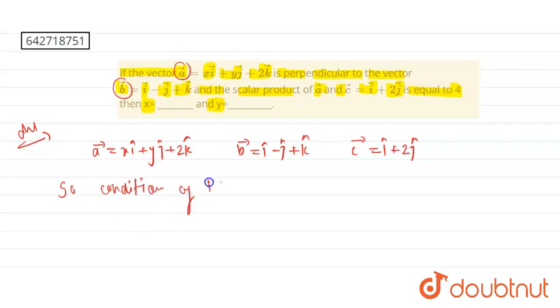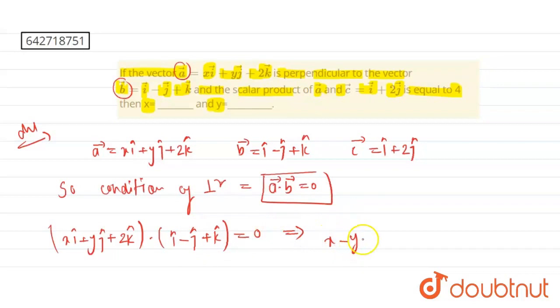The condition of perpendicular is that the dot product of vector A and vector B equals 0. So here we have A dot B equals xi plus yj plus 2k dot i minus j plus k, which equals 0. So we have finally here, x minus y plus 2 equals to 0.